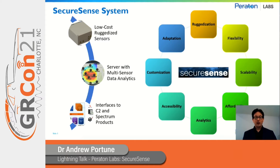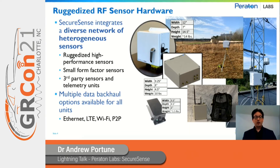SecureSense was designed to meet eight different features shown on the right, including ruggedization, flexibility, scalability, affordability, analytics, accessibility, customization, and adaptation to changes in the environment. These eight principles direct the system towards providing robust spectrum situational awareness.